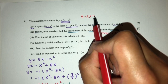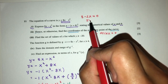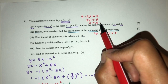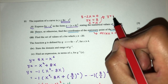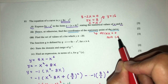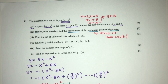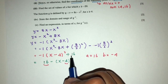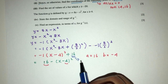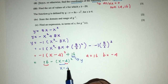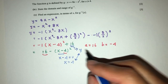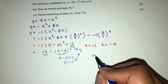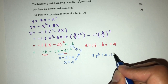Setting dy/dx = 8 - 2x = 0 gives 2x = 8, so x = 4. When x = 4, y = 8(4) - 16 = 32 - 16 = 16. So the stationary point is at (4, 16). Using the completed square form, the maximum value of 16 occurs when (x - 4) = 0, i.e., x = 4 — confirming the stationary point.